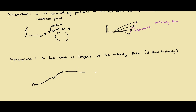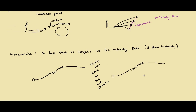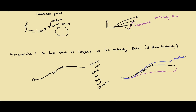A streamline looks exactly like a pathline and streakline for steady flow. For unsteady flows, the streamline may change with time — at some different time, the particle may travel in a different path, shown here as a purple line, and sometime later it may travel differently again, because the velocity field is not the same in unsteady flows. The key point is that the streamline, streakline, and pathline look exactly the same in steady flow, but in unsteady flow, the streakline and streamline appear slightly different.